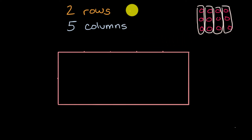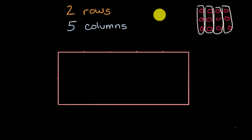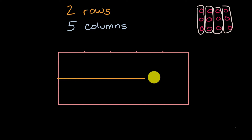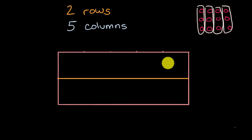Now that we understand what rows and columns are, let's think about — maybe pause this video and think about how would you divide this rectangle into two rows? The way I would tackle it is I would draw a line that goes from left to right. And there you have it — I now have the rectangle split into one row and now a second row.